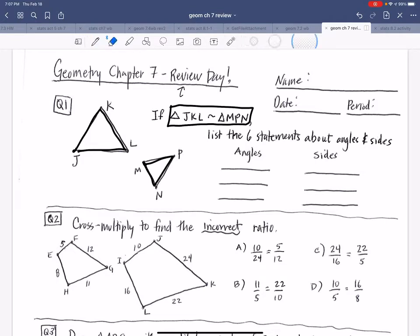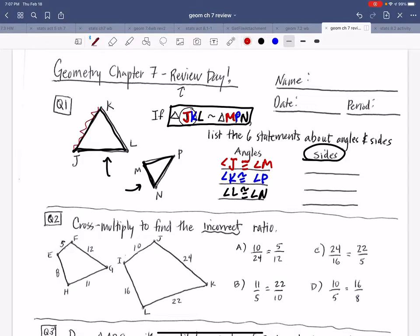When we're given two triangles, if they give us a similarity statement, we don't go by looks, we go by that similarity statement. If J was mentioned first and M is mentioned first, we know angle J has to match angle M. If K is second and P is second, then angle K equals angle P. Now, unlike when they were congruent, their sides have to make the same ratios.